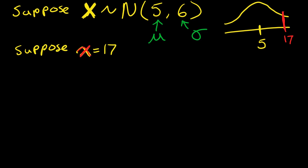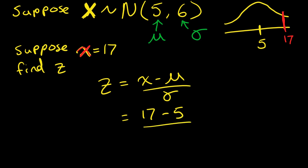Then they want us to find z. There's a nice formula for z: z equals little x minus mu divided by sigma. So what is little x? It's 17, mu is 5, sigma is 6. Don't forget, you have to do what's in the top of that fraction first, the numerator first. So 12 divided by 6, which is 2.